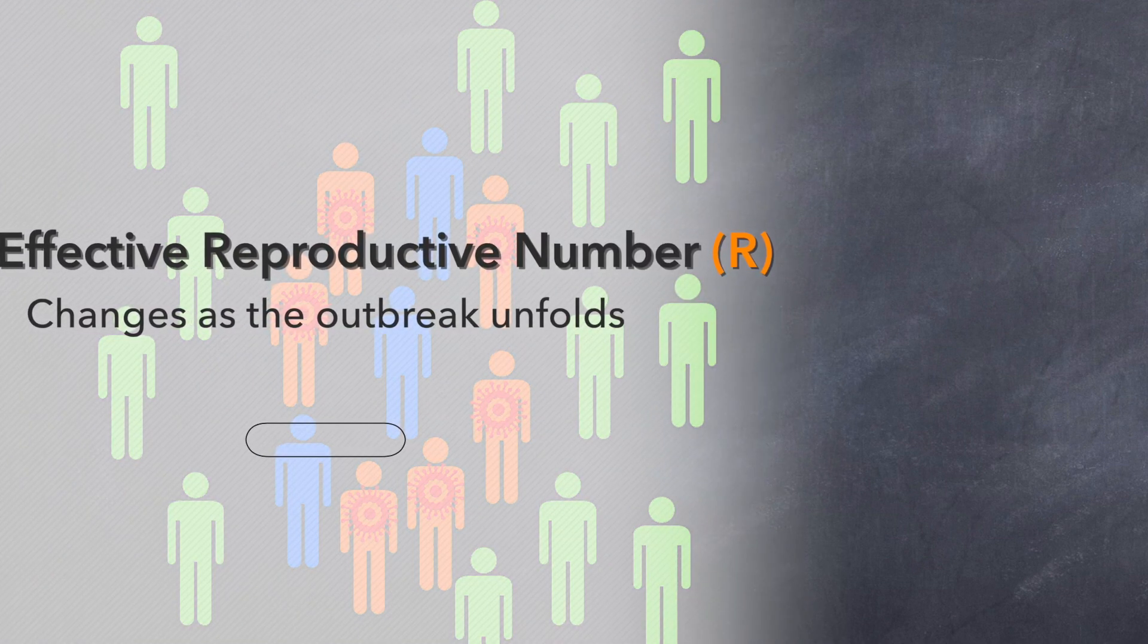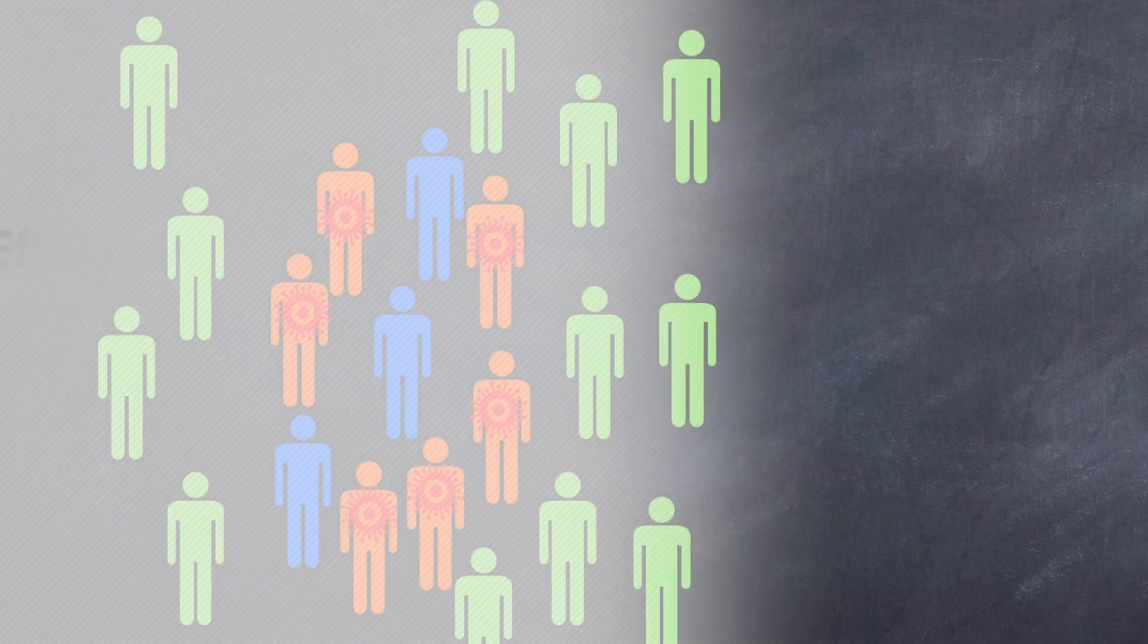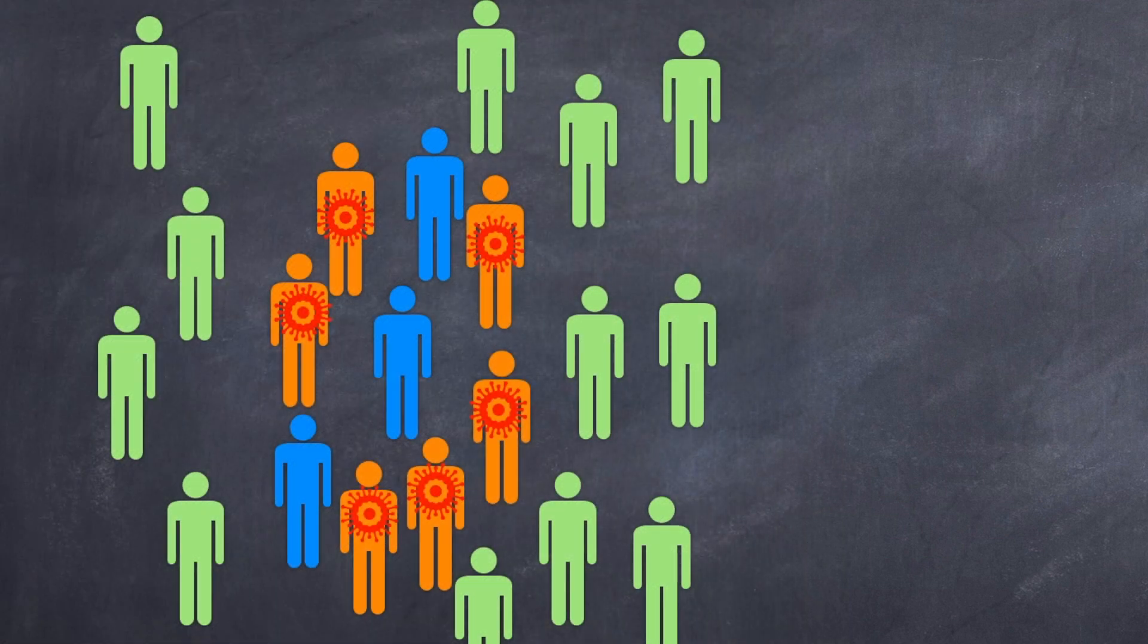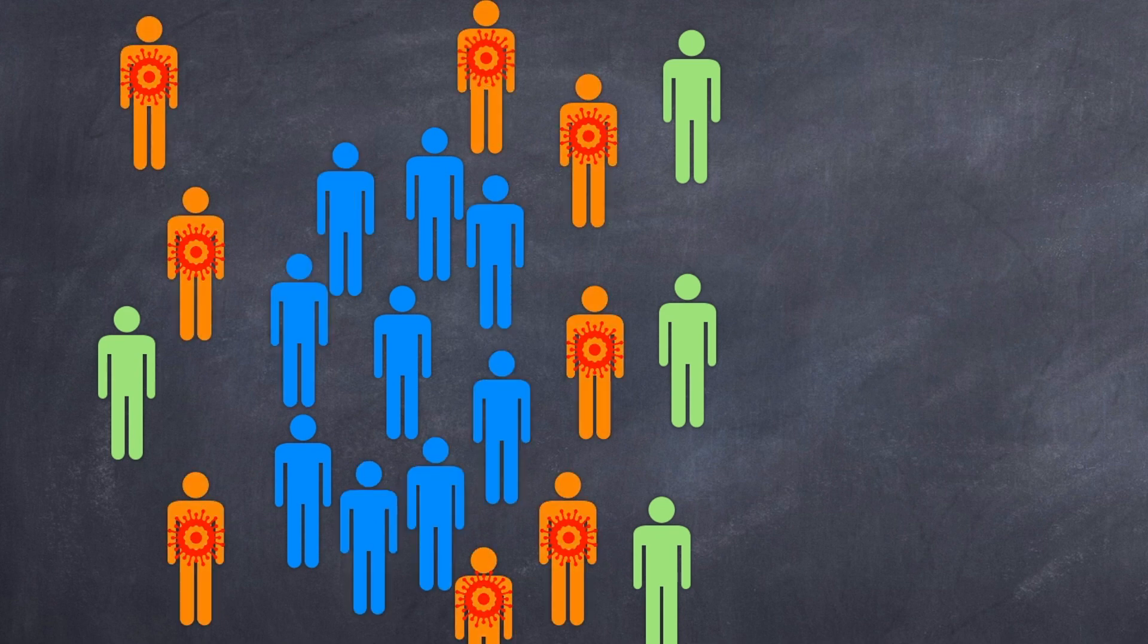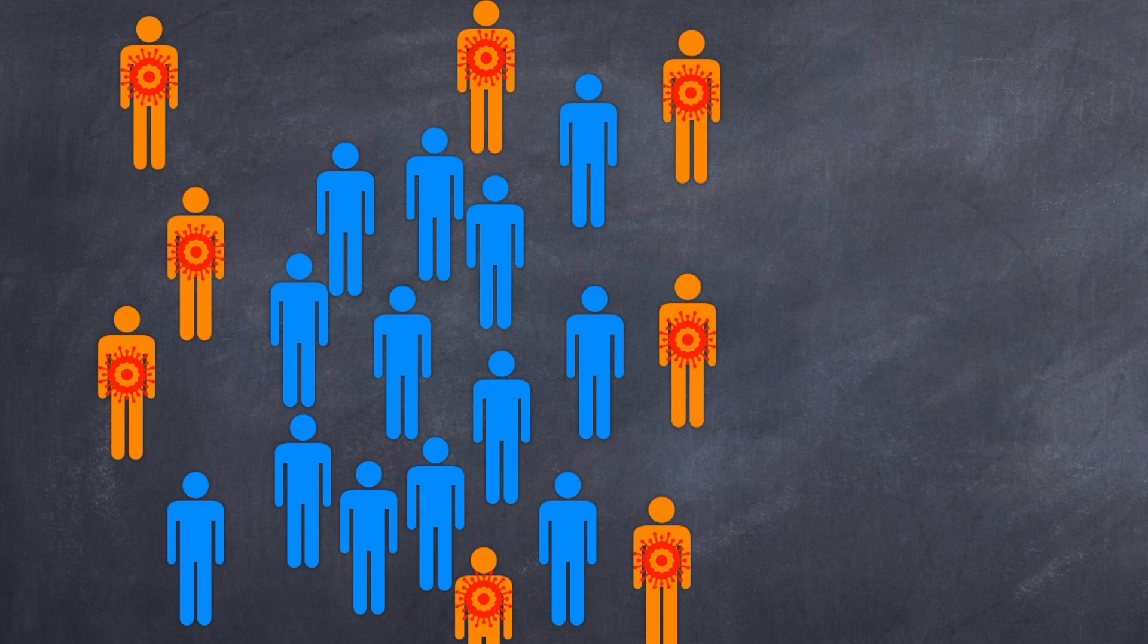And we call this new number the Effective Reproductive Number or just R. And this Effective Reproductive Number or R changes as the outbreak unfolds. And so now we've got an R of just less than two. The virus is still spreading in the community. And as the number of susceptible individuals becomes less, R drops even further. And in some outbreaks, you might even run out of susceptible people completely. And by the way, you don't need absolutely everybody to have been infected for an epidemic to burn out. All you need is a sustained R of less than one.